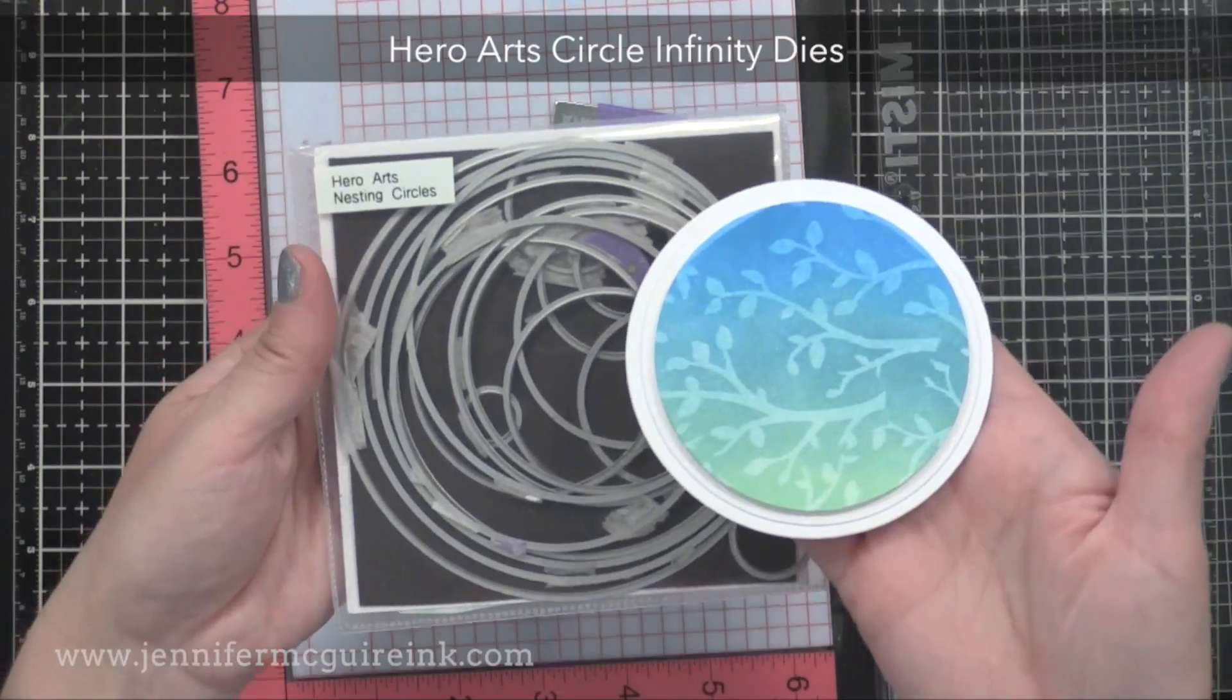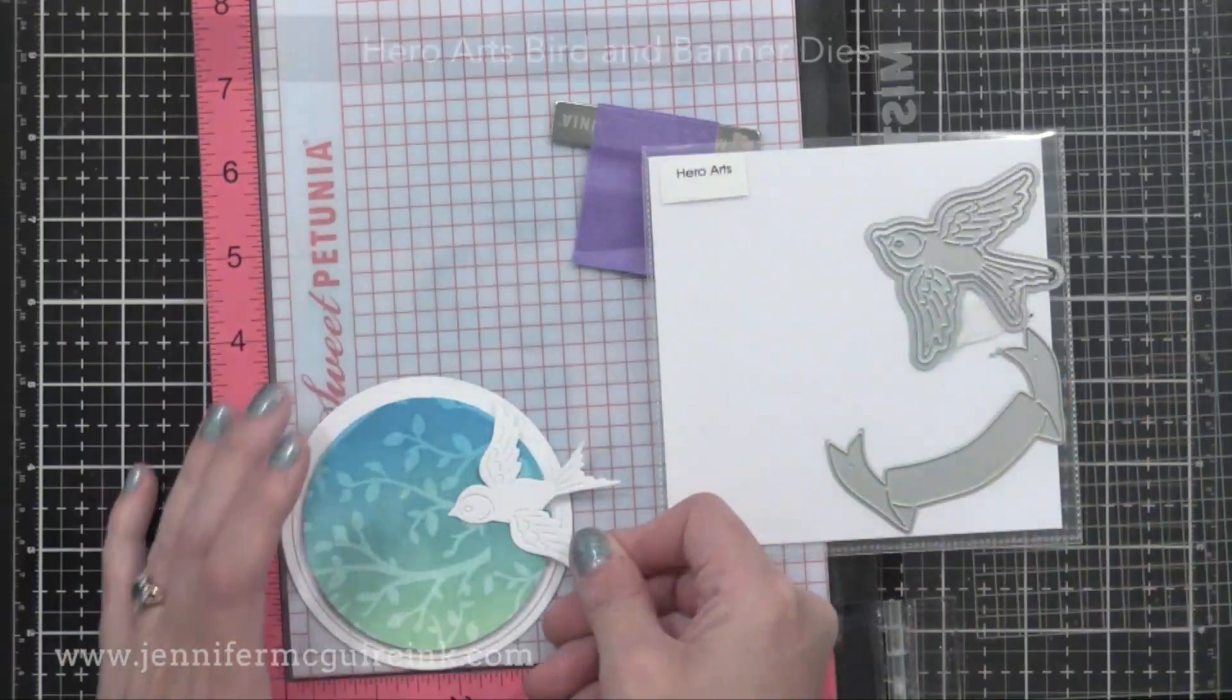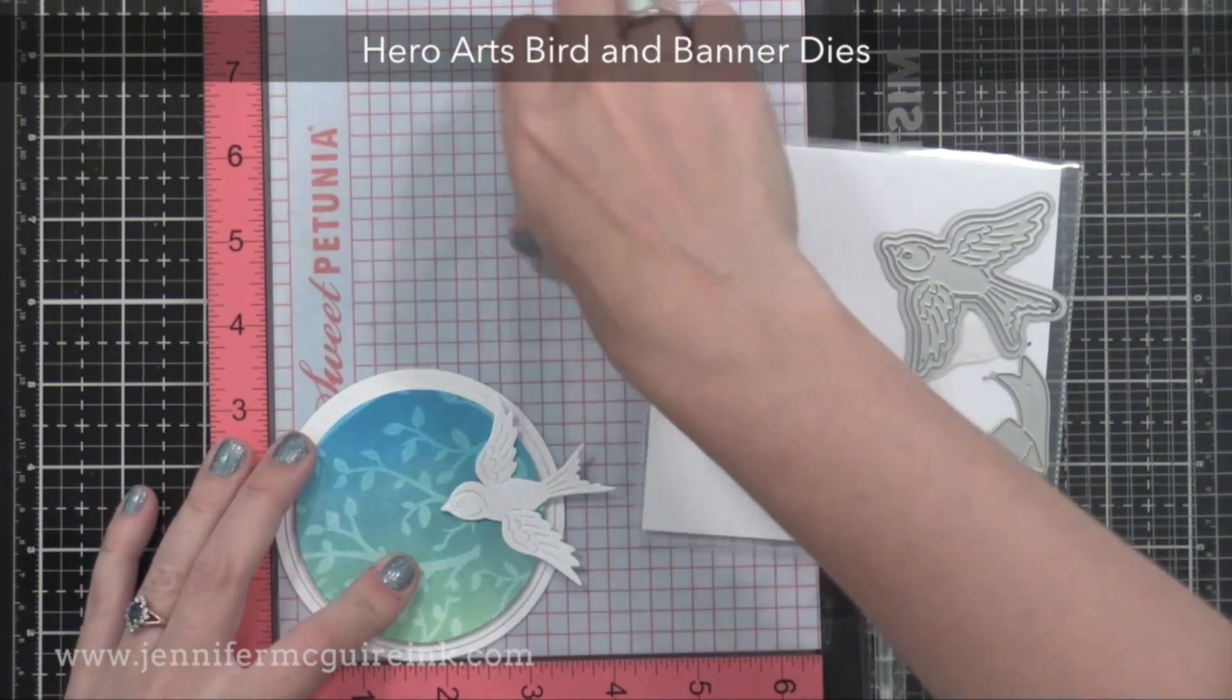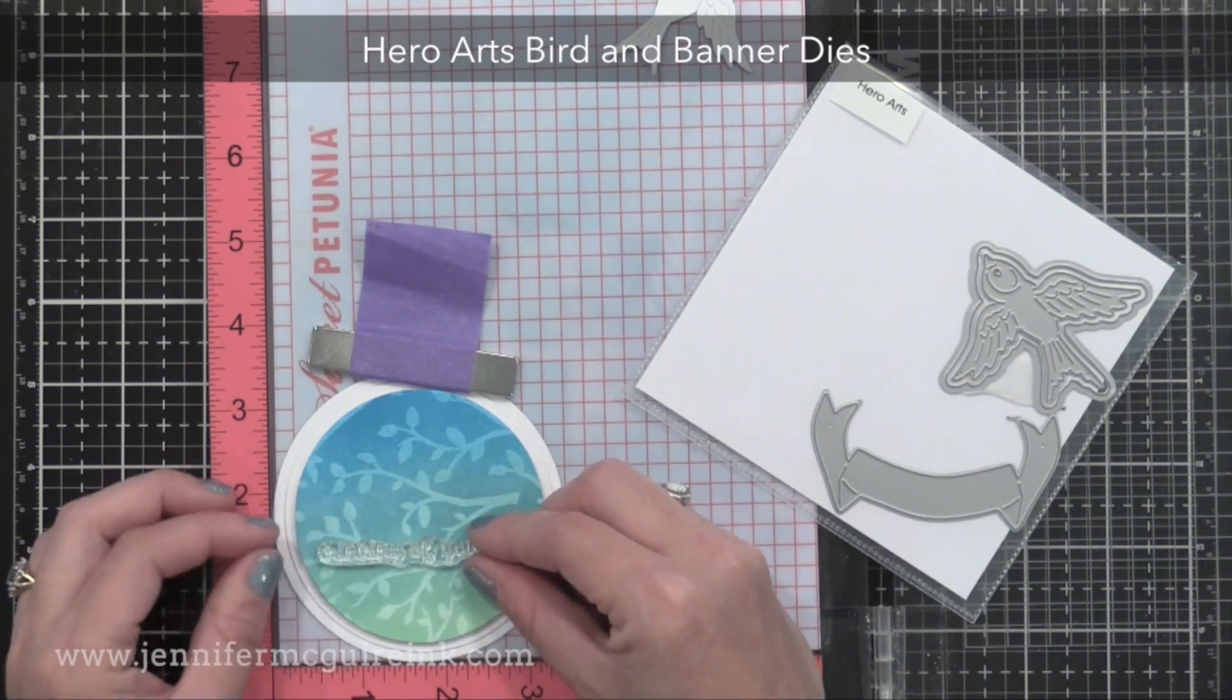I used the Hero Arts Nesting Circle dies to cut a circle from that pattern, and then a couple of other larger circles that I stacked behind it. I have a Hero Arts Bird and Banners die here that I'm going to add to it, a little white bird.